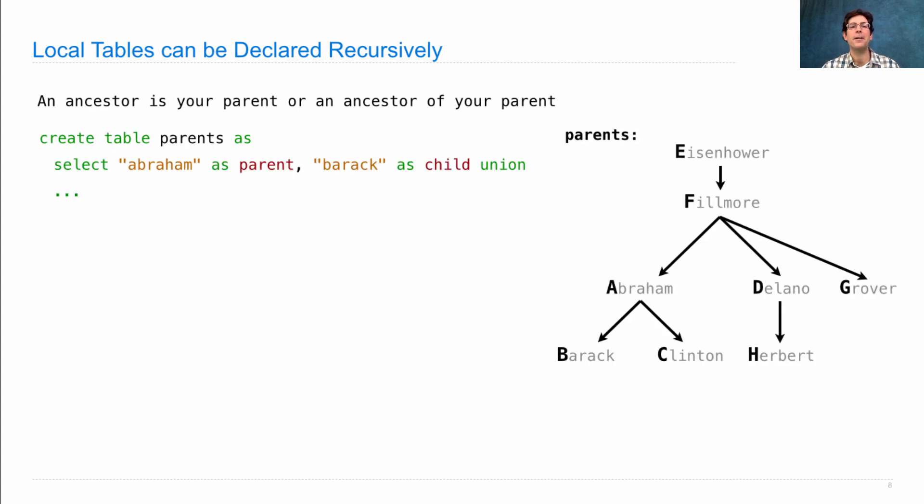Assume that we've already created the table of parents, just like we had before. And what we'd like to do is come up with a table of all the ancestors of Herbert, which include Delano, Fillmore, and Eisenhower.